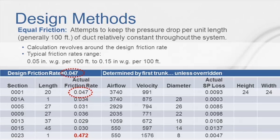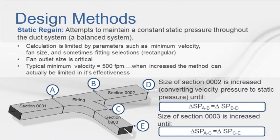Duct Designer supports both the equal friction and static regain methods of duct design. If you've been using the ductylator to design your duct runs you're already familiar with the equal friction method, which attempts to keep the pressure drop per unit of duct length relatively constant throughout the system. In contrast, the static regain method attempts to maintain a constant static pressure throughout the duct system. Due to the calculations required, the static regain design method is impractical for hand calculations; however, it's the ideal method when designing a duct network on a computer.